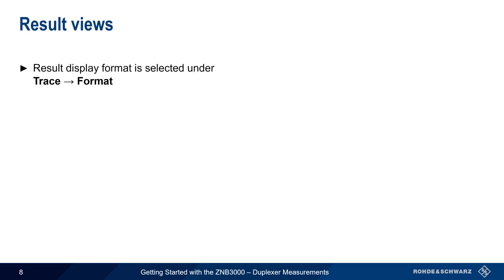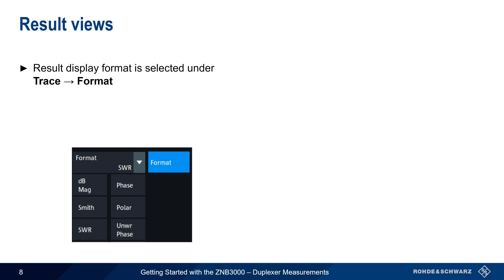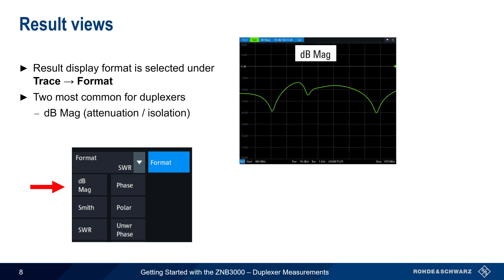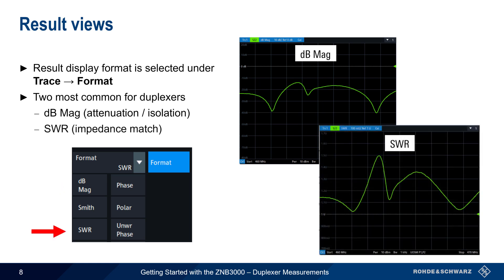To select how results are displayed, choose Trace and then Format. For duplexer measurements, results are most often shown either as dB magnitude for attenuation and isolation measurements, or as standing wave ratio when measuring impedance match. We'll provide examples of both formats in this presentation.